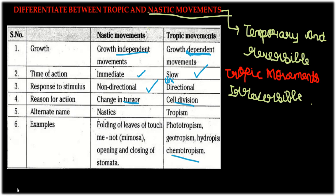Nastic movement is growth-independent movement. It is reversible and non-directional, involving a change in turgor. An example of nastic movement is Mimosa — the touch-me-not plant, which is called Chui Mui in Hindi.